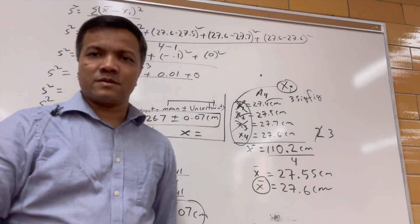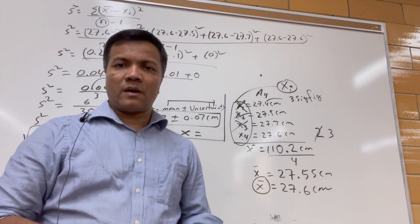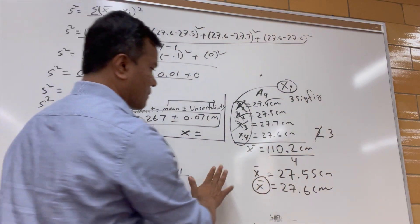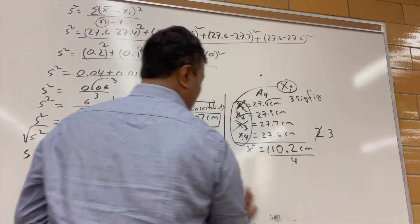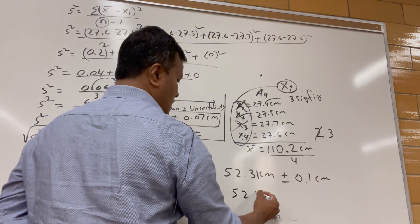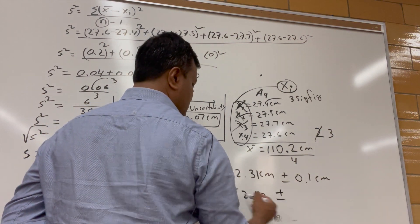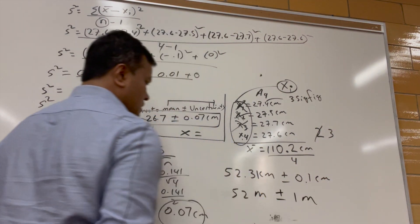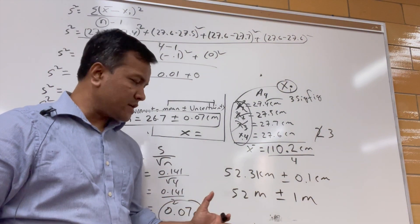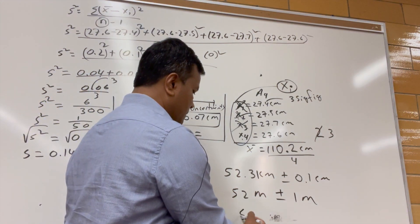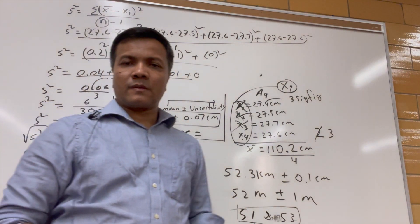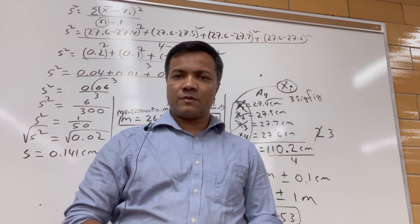So this is what we've learned. In this physics class, the good news is: when you measure something — say it is 52 meters — then you write plus or minus 1 meter. What does that mean? It means the true value lies between 51 and 53 meters. That's what we learned today.